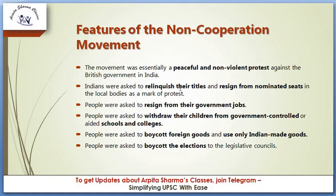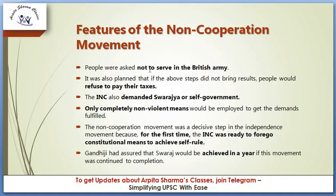The people were asked to withdraw their children from government-controlled or aided schools and colleges. People were asked to boycott foreign goods and use only Indian-made goods. People were also asked not to serve in the British army. It was planned that if these steps did not bring results, people would refuse to pay their taxes.